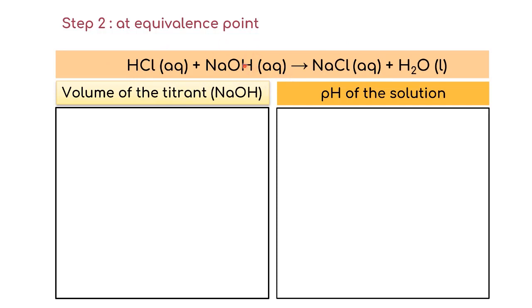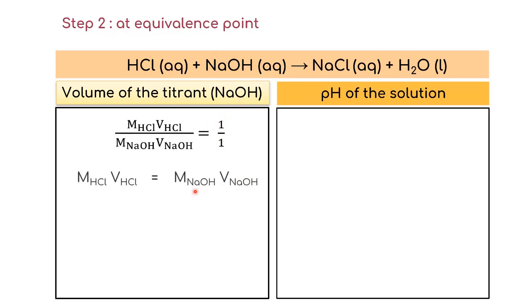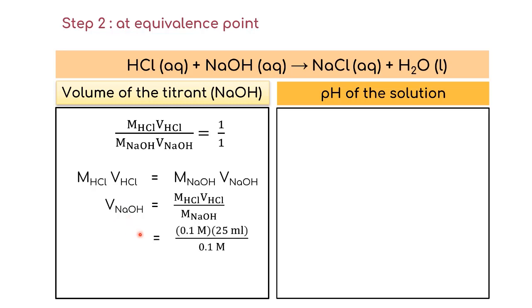For this example, we have a one-to-one reaction, so we proceed with M_acid·V_acid = M_base·V_base. We already know both concentrations and the volume of the analyte. We want to find how much titrant is needed to form the salt, so we set aside the volume of NaOH and substitute the known values. Lastly, you get 25 mL as the volume at the equivalence point.